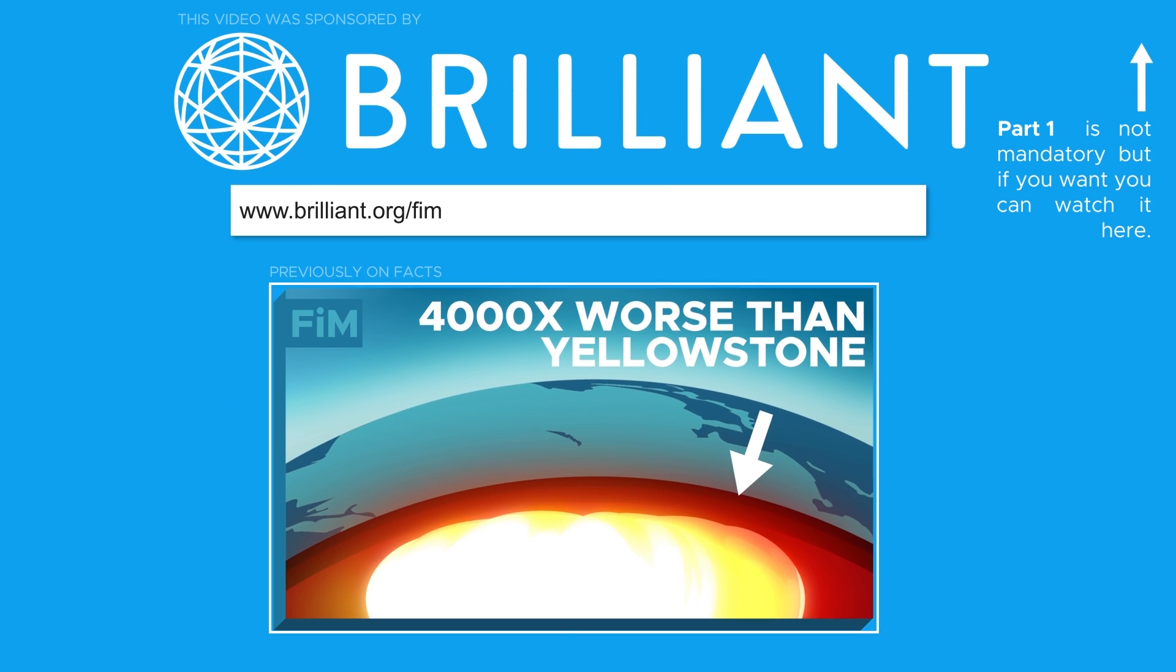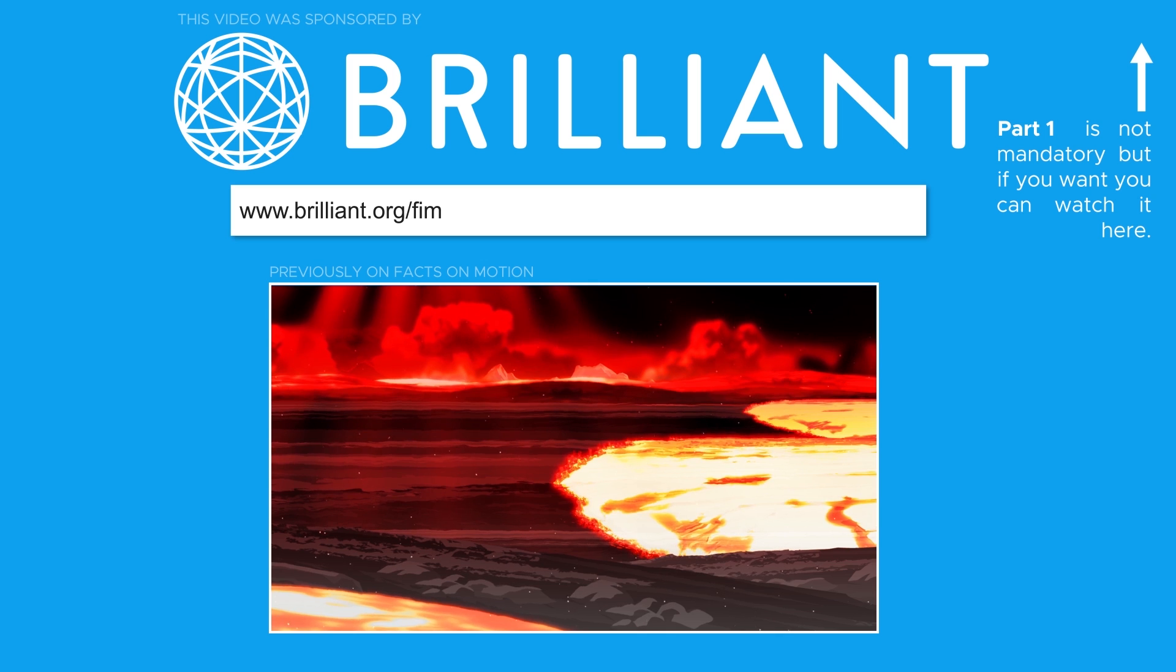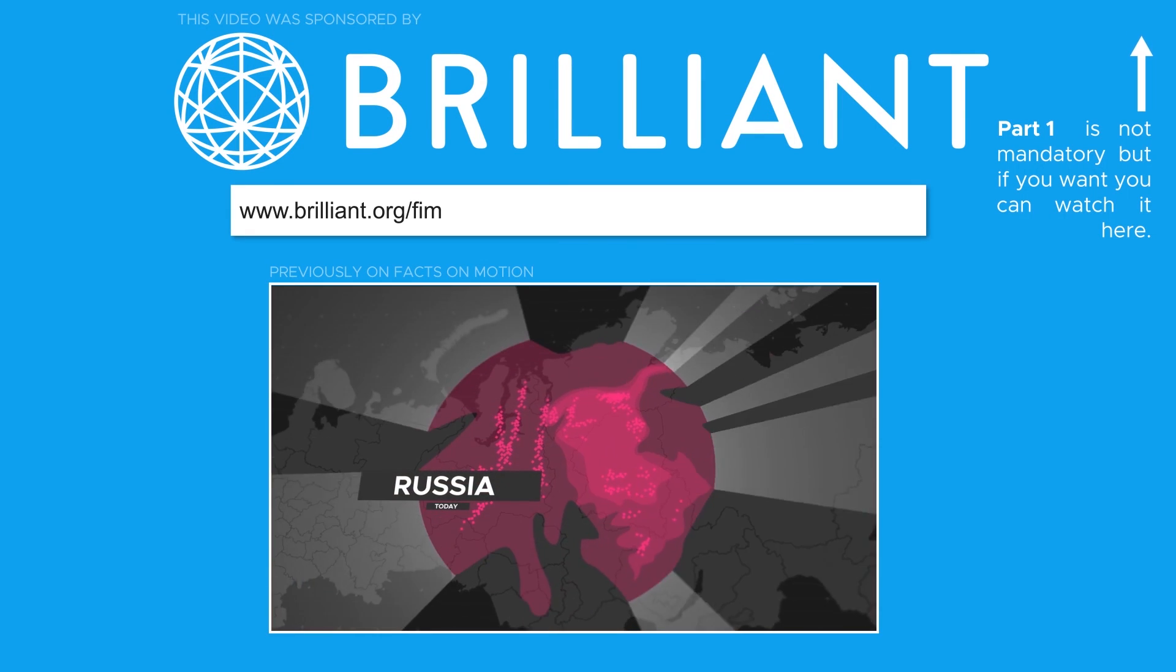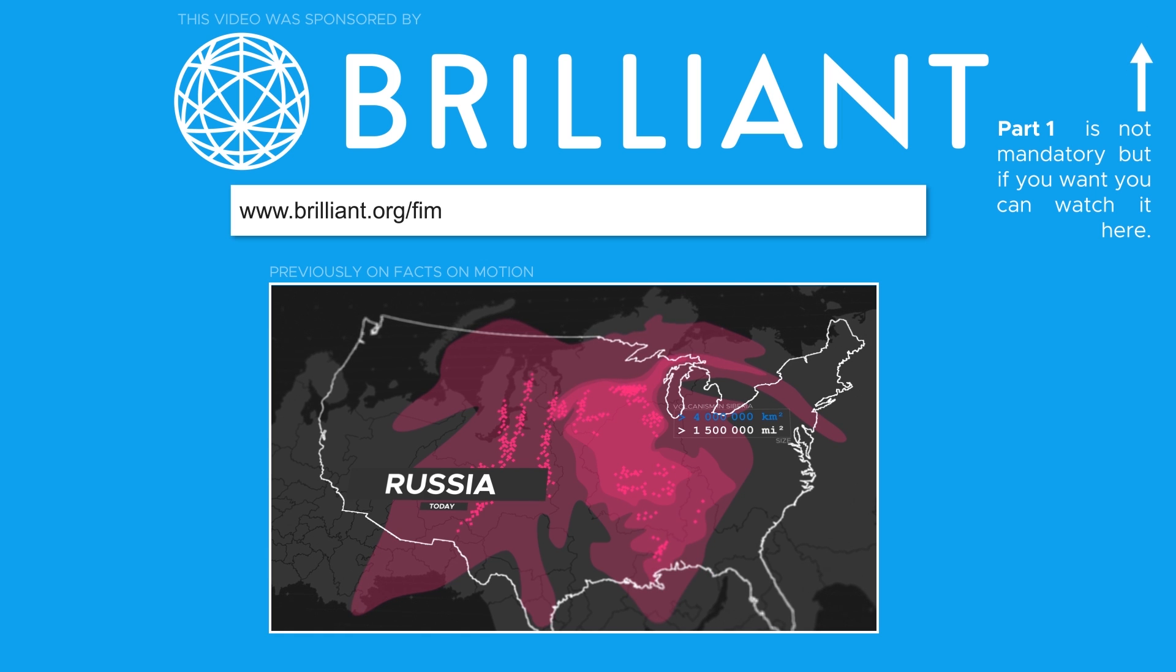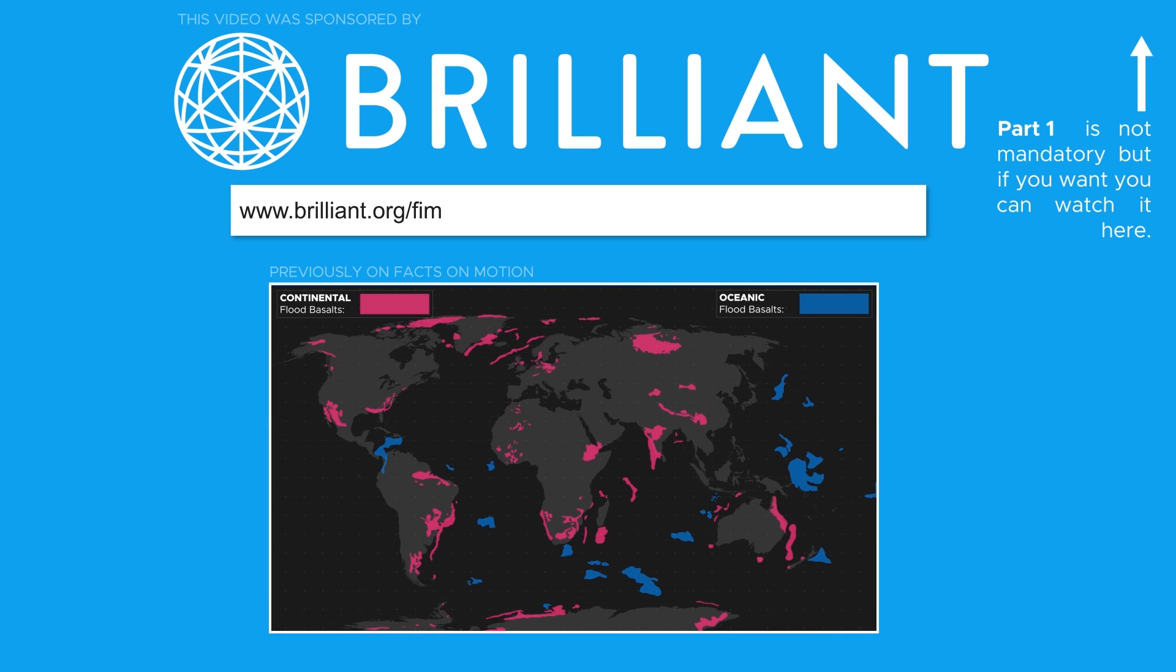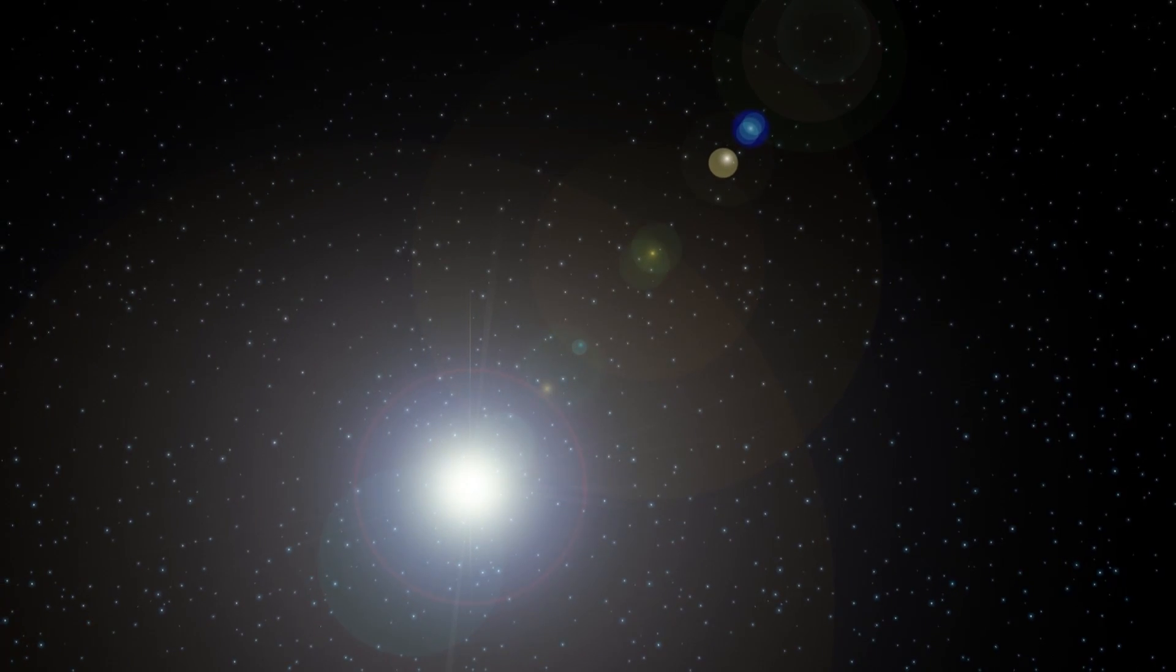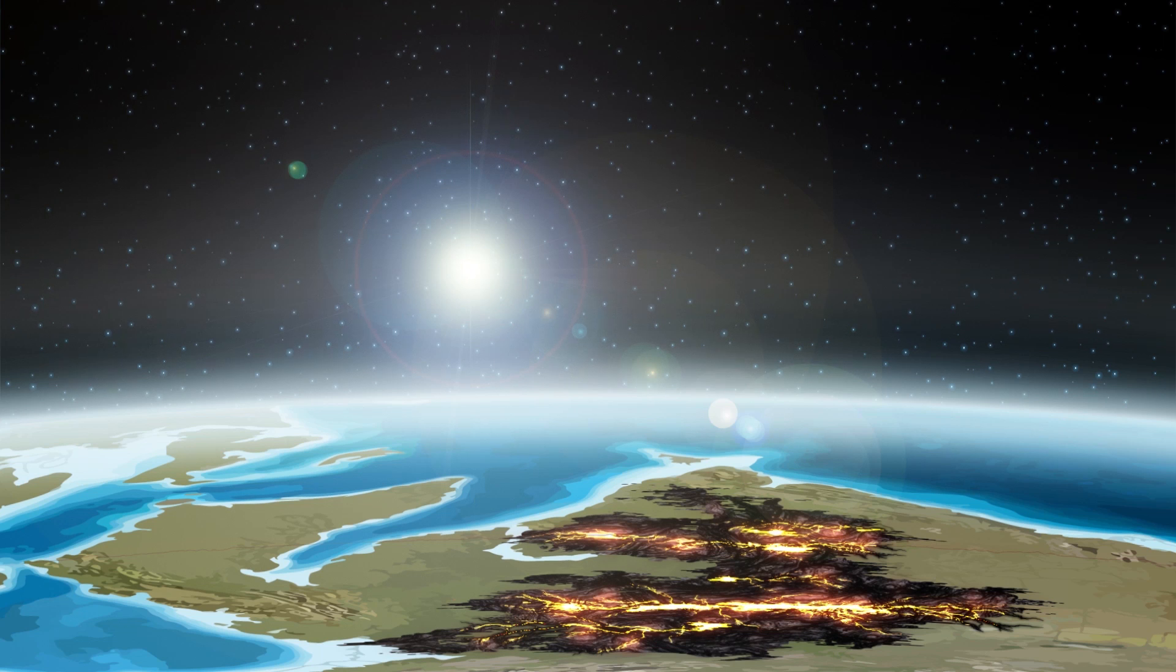In the first video about flood basalts, we learned what flood basalt eruptions are and what scope they had. We explored using the example from the Siberian Traps, which are the remnants of one of the largest of these eruptions in history, what impact this kind of volcanism can have on our planet and its inhabitants. One question, however, remains to be answered: where did they come from? Or more specifically, what causes these cataclysmic eruptions? That's what we will explore today.